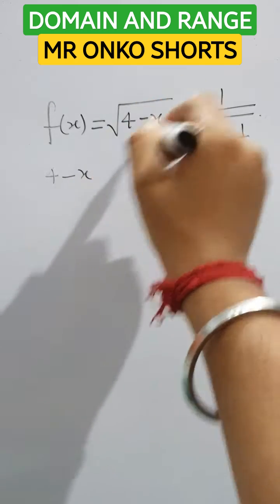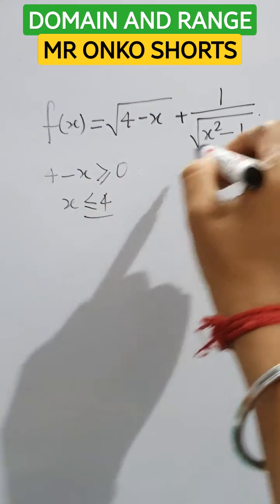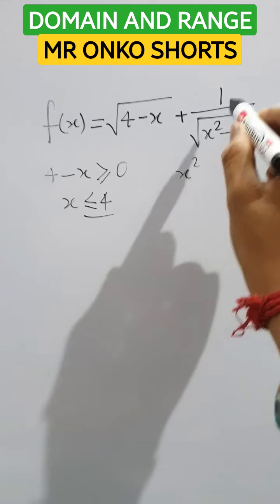observe the first part, that is 4 minus x under root. So it must be greater than or equals to 0, so x is less than equals to 4. Now this is under root and in the denominator, so it